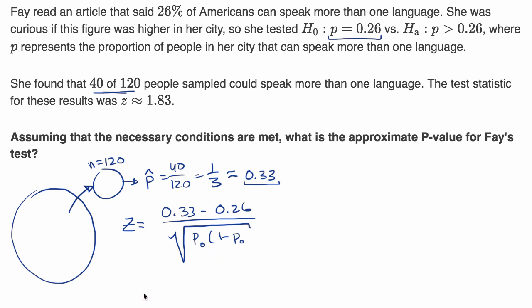In this particular situation, that would be 0.26 times one minus 0.26, all of that over our n. That's our sample size, 120. And if you calculate this, this should give us approximately 1.83. So they did all of that for us.